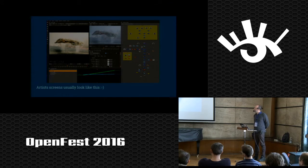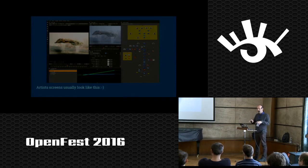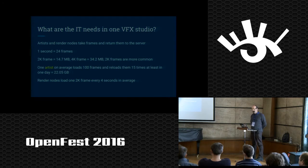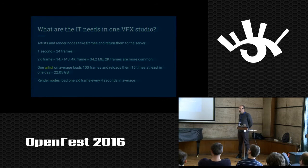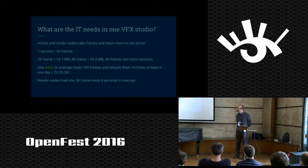I wanted to show you how the screen of one animator looks like — my screen is just a terminal. What are the needs of the visual effects studio? In one second you have 24 frames. We usually use 2K frames, which are about 14.7 megabytes each. There are 4K frames, which are three or four times bigger. These numbers can vary, but 2K frames are more common. When movies came in 4K, we had a massive upgrade of our network and server infrastructure because we needed more power. One artist on average loads 100 frames — that's a rough average.